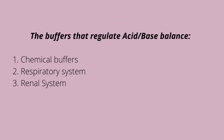There are three buffer systems that regulate our acid-base balance. First is the chemical buffer — these are present in the body fluids and act immediately. They bind and release hydrogen ions to help maintain acid-base balance. If that doesn't work, it goes to the respiratory system. The respiratory system controls carbon dioxide in the arteries and responds to changes in oxygen levels, inducing changes in breathing. Lastly, the renal system is slower but more powerful and longer-acting. The renal system responds by reabsorbing bicarbonate to maintain homeostasis.